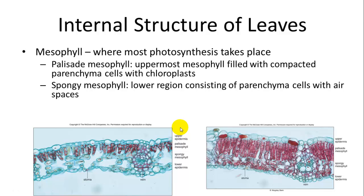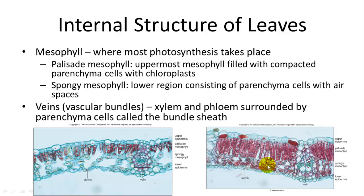Within the leaf, under the epidermis, you have the mesophyll, where most photosynthesis takes place. The uppermost part of the mesophyll is the palisade mesophyll, stacked with parenchyma cells that have lots of chloroplasts. The spongy mesophyll is the area below it, with more air spaces and parenchyma cells. The vascular bundles — where the xylem and phloem are — are surrounded by parenchyma cells called bundle sheaths.